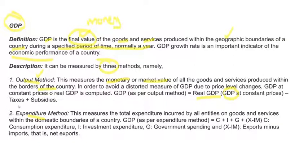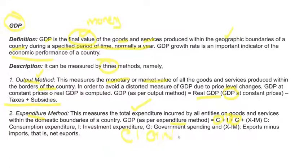The next measure is the expenditure method — total expenditure incurred by all entities on goods and services produced in the domestic territories of the country. GDP as per the expenditure method is: consumption plus investment expenditure, then government spending, and exports minus imports — that is, net exports. Consumption, investment, government spending, and net exports add to GDP under the expenditure method.